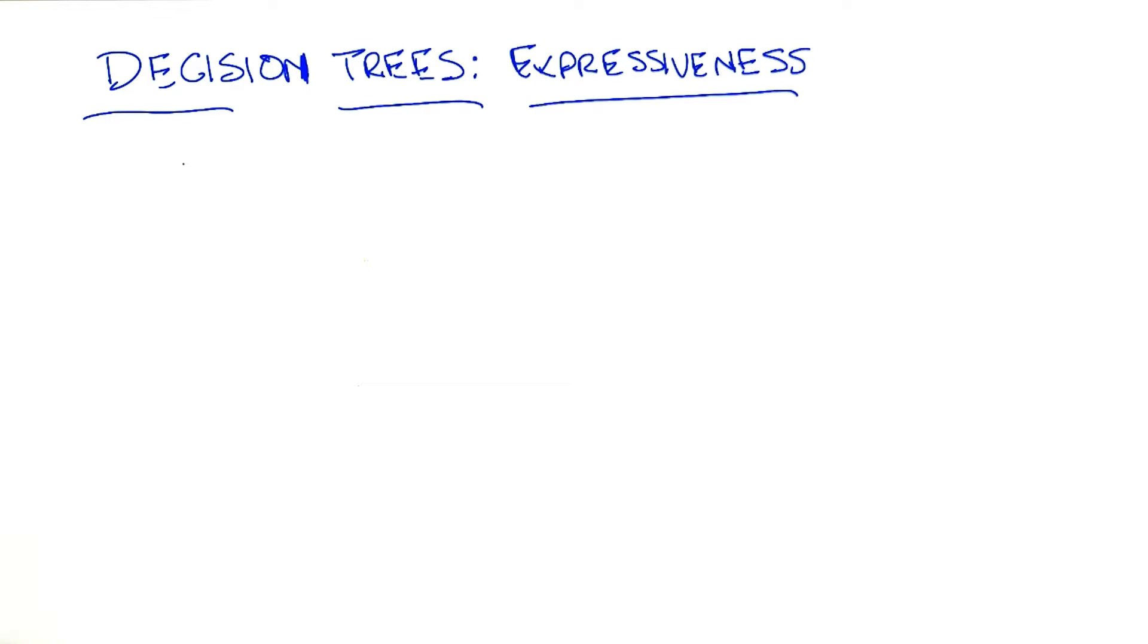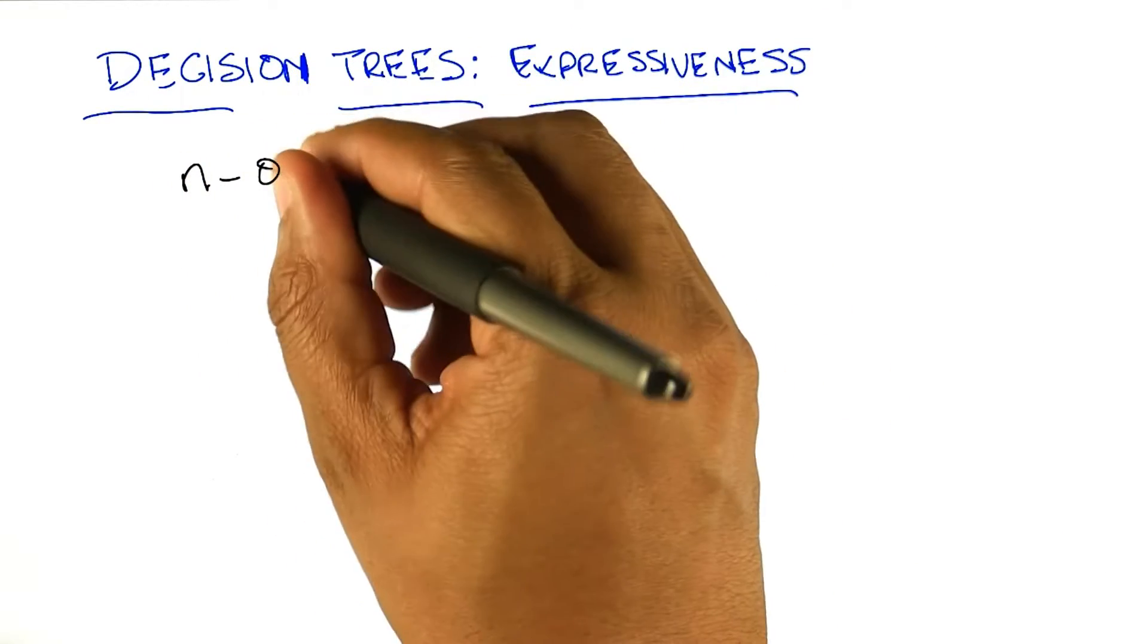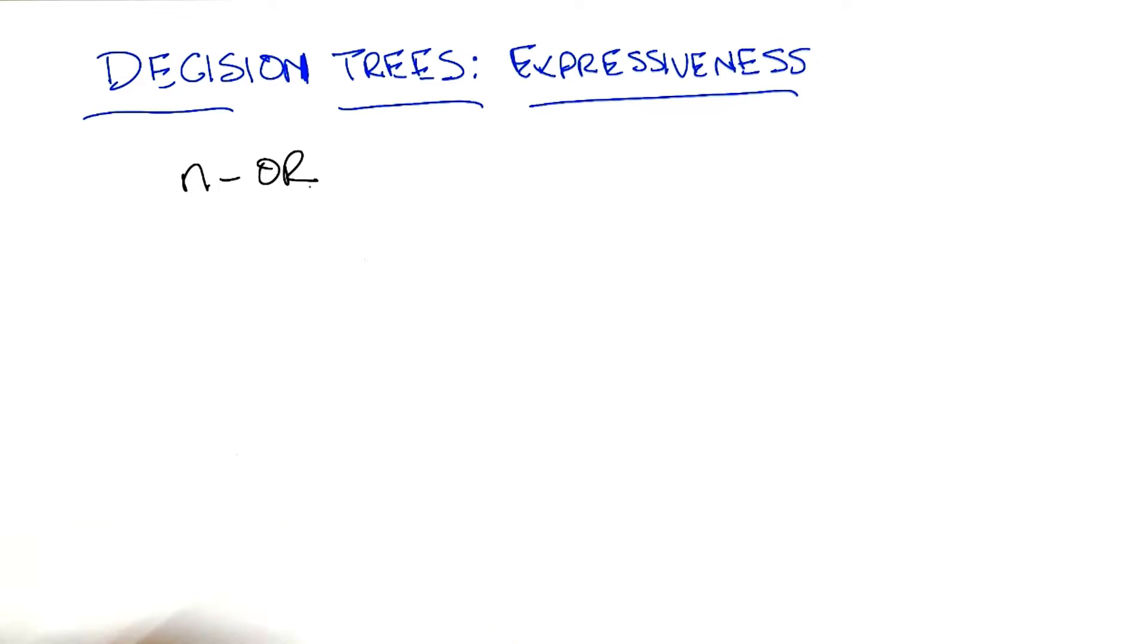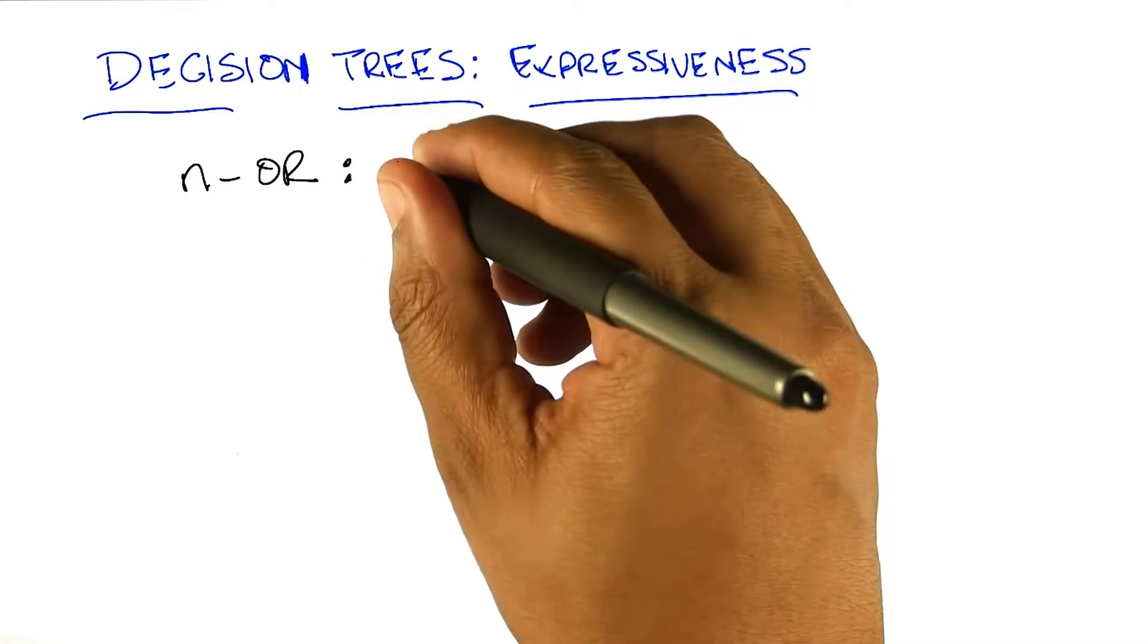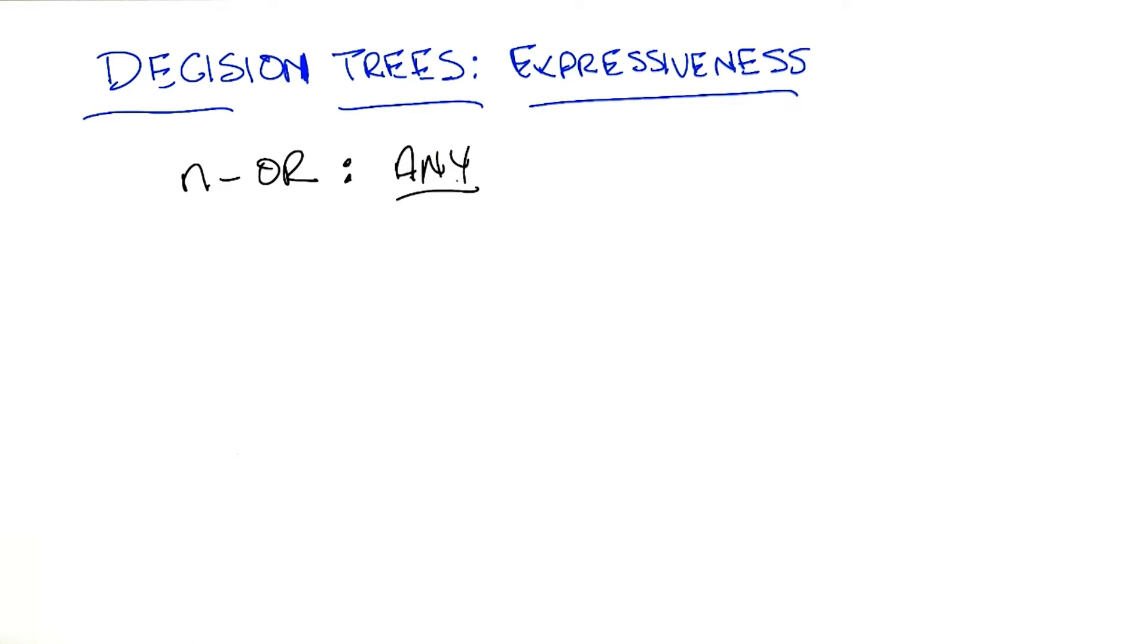So let's look at generalized versions of OR and generalized versions of XOR and see if we can see how the size of the decision tree grows differently. So in the case of a generalized version of OR, that is we have N attributes as opposed to just two, we might call that the any function. That is a function where if any of the variables are true, then the output is true.